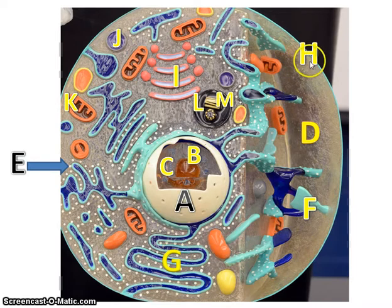H, we already covered, cell or plasma membrane. I is the Golgi apparatus. J is a lysosome. K is the mitochondria. L is the centrosome, which is this whole brown structure. Within the centrosome are contained centrioles, which are these yellow structures.